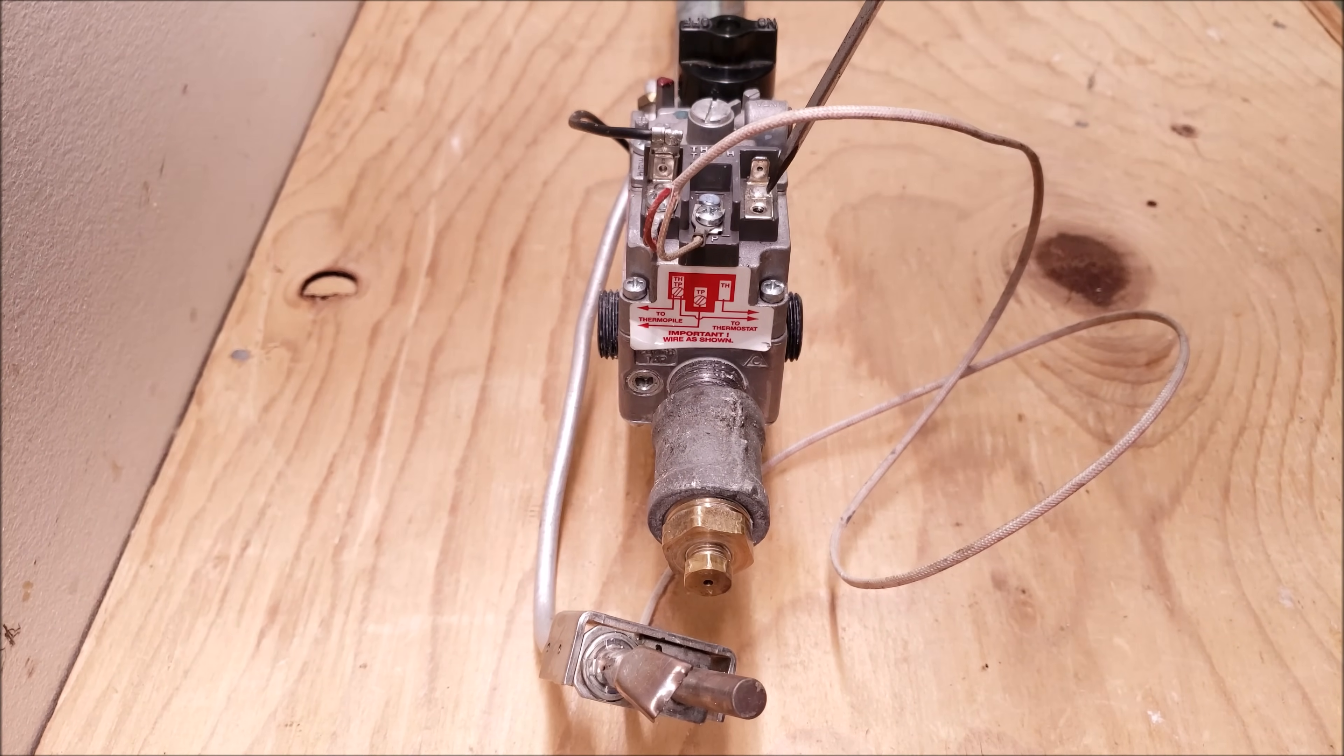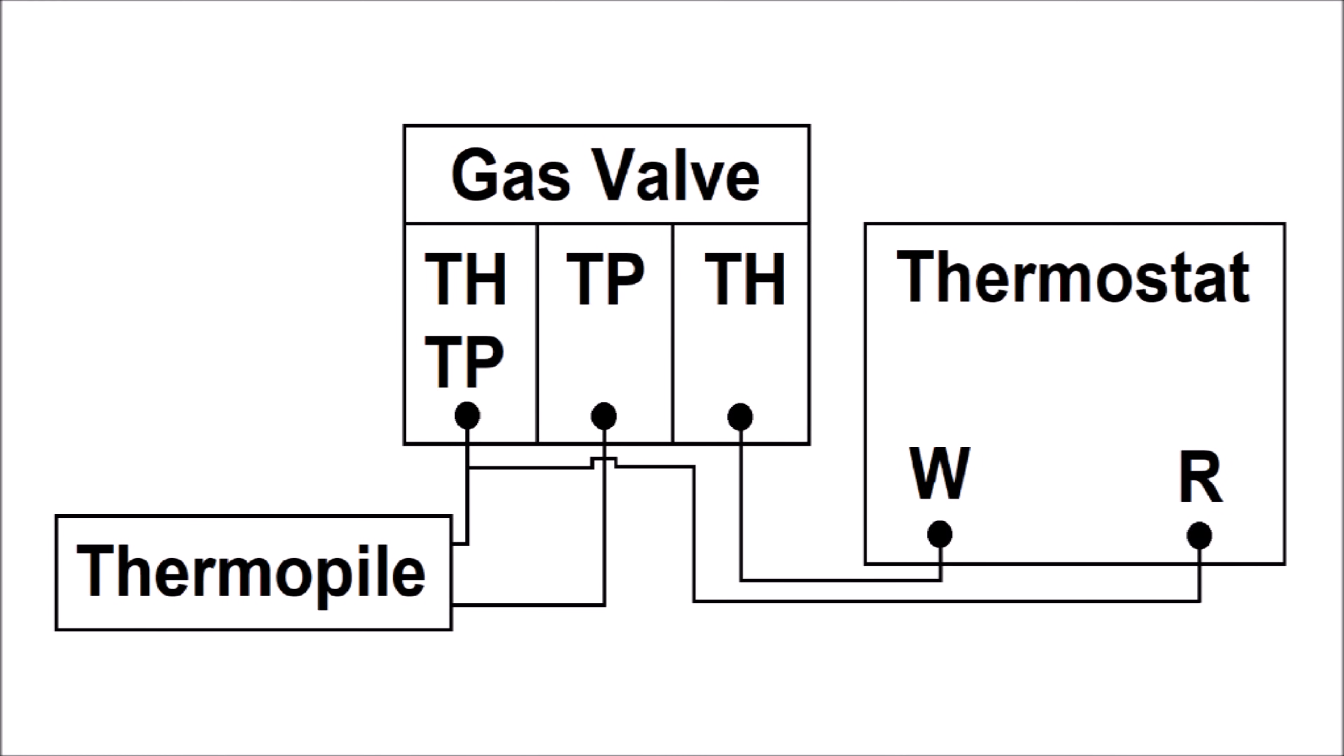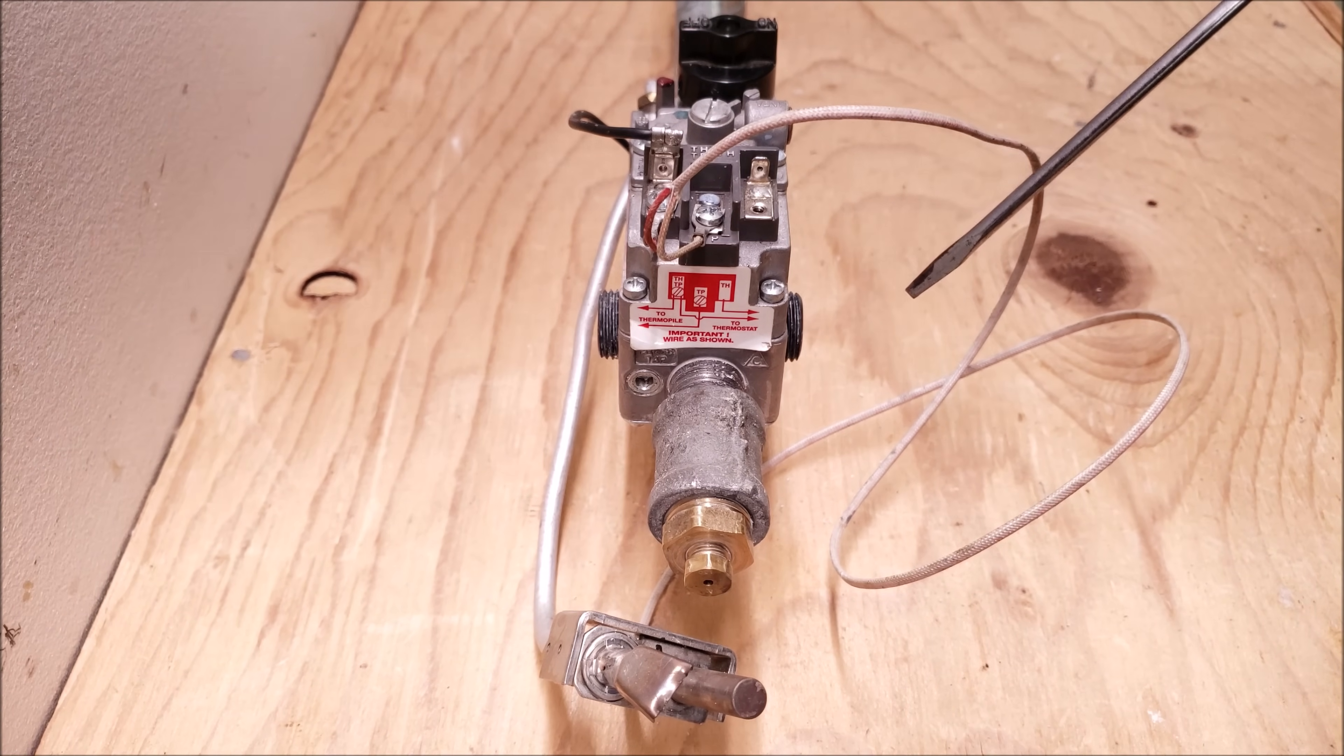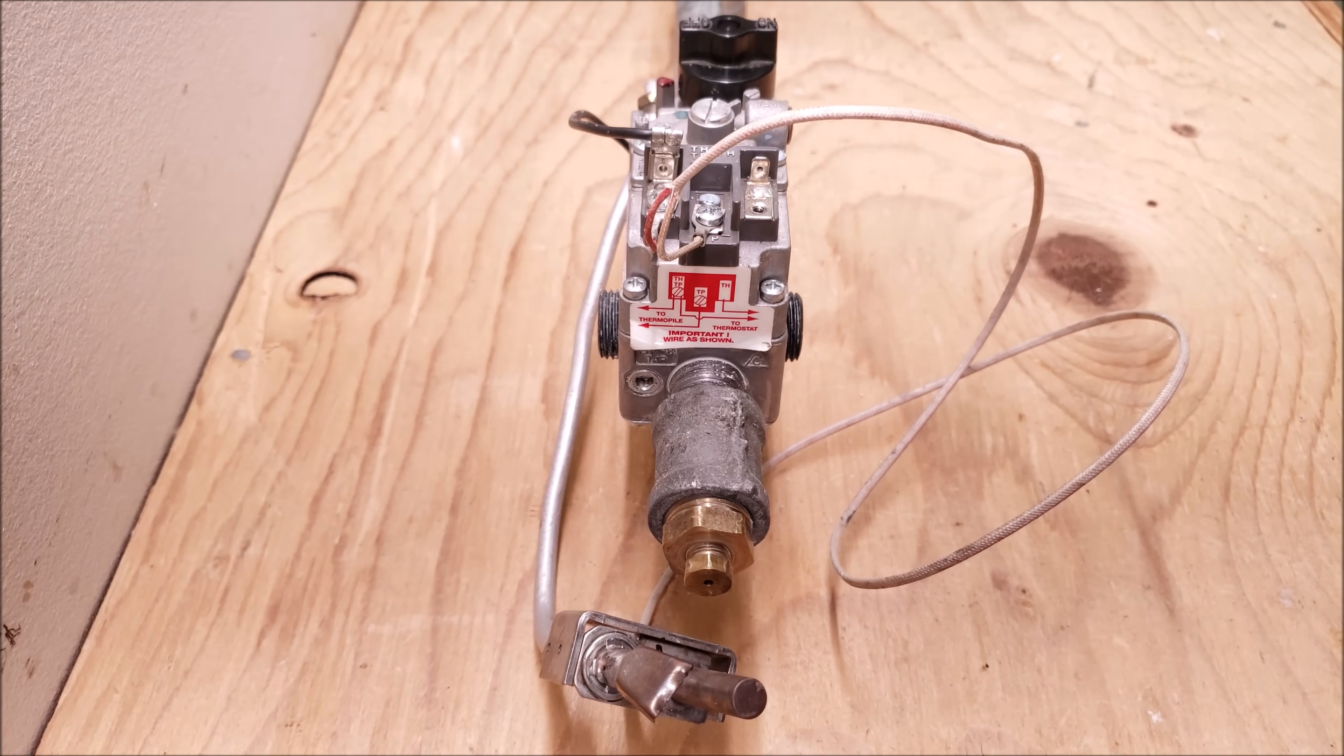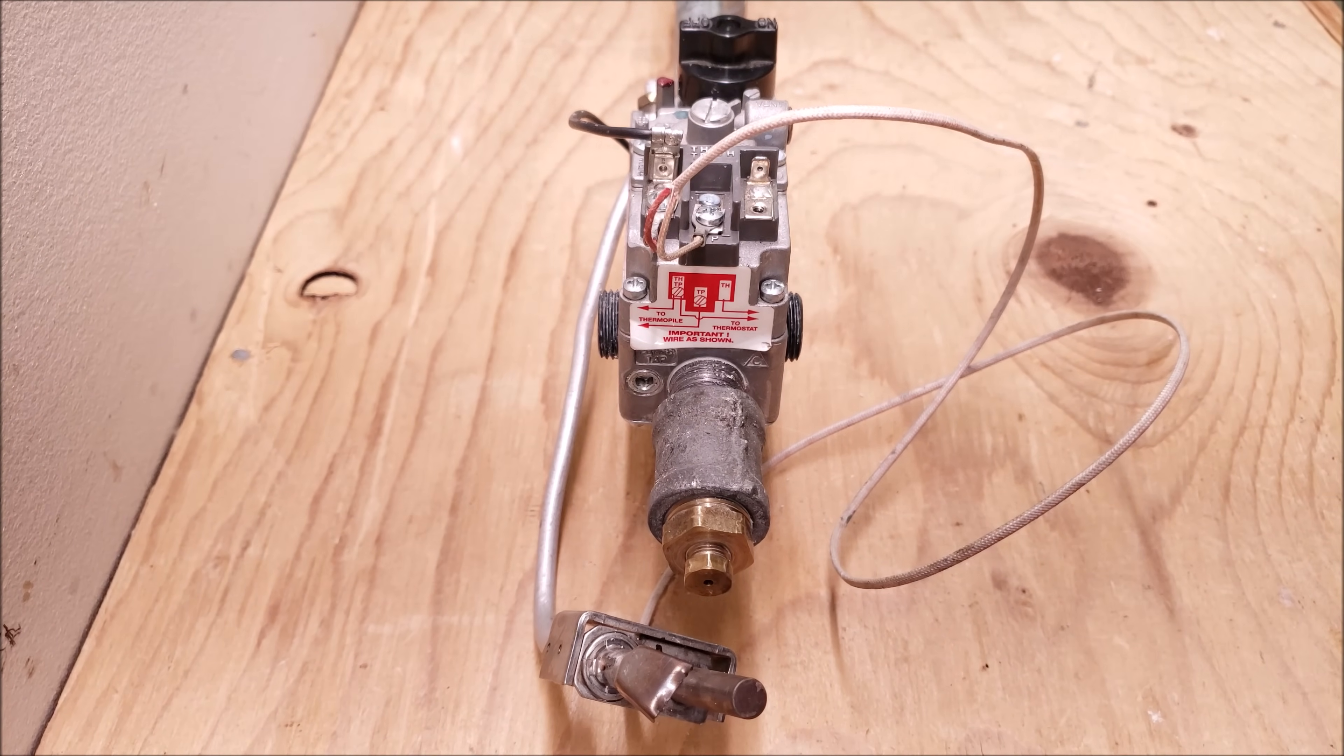It goes through the solenoid and finds its way back through this TP and that's how it powers the main burner. So now I'm going to go ahead and light the pilot so that you can see how this works. If you are looking for a troubleshooting video on the thermopile and millivolt gas valve I have that link down in the description section below.